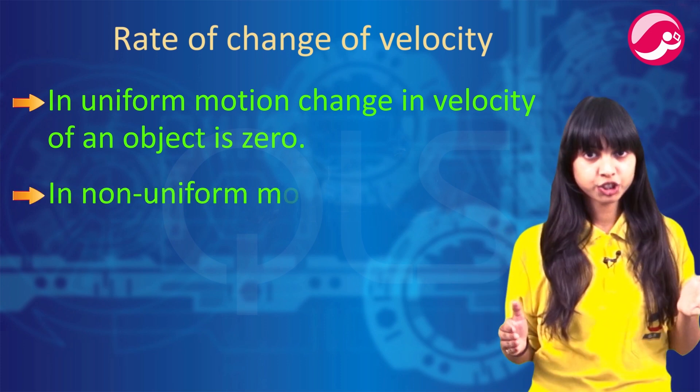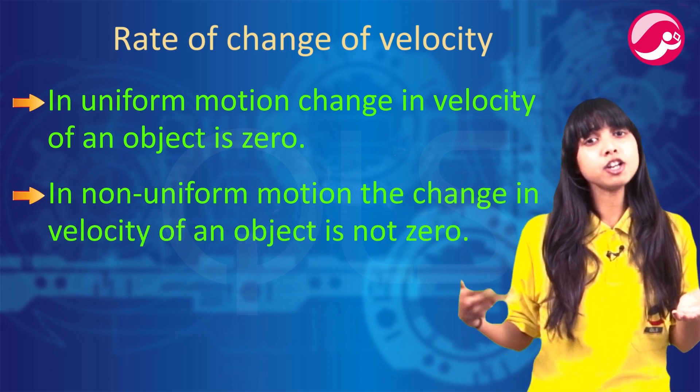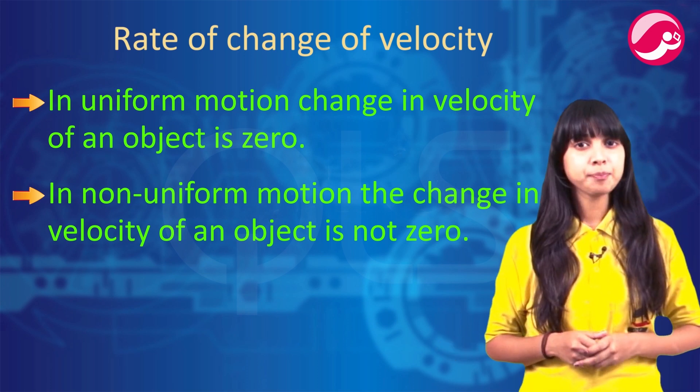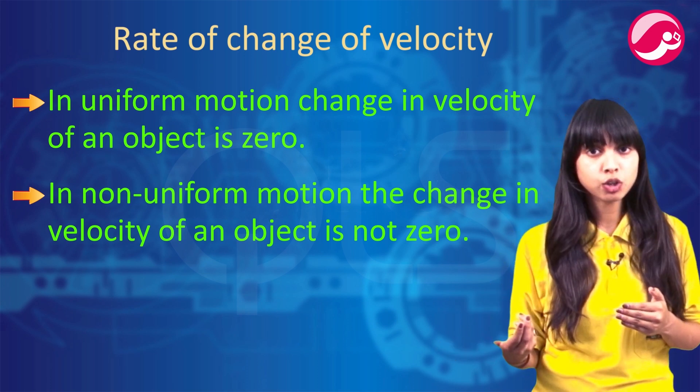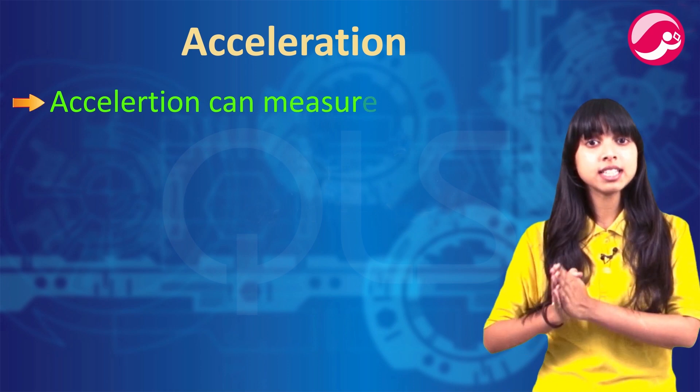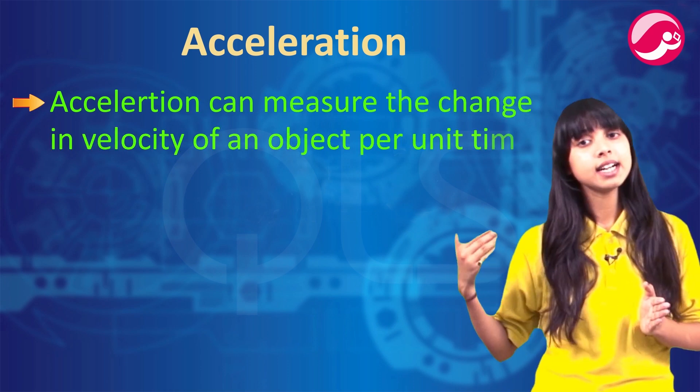In non-uniform motion, the change in velocity of an object is similarly non-zero. Why? Because it is non-uniform motion. In such cases, we need to introduce one physical quantity. That will be acceleration.